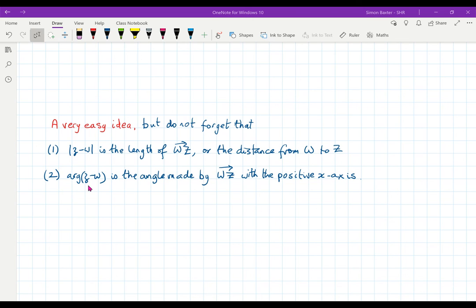And the second, the argument of the number Z minus W is the angle made by the vector WZ, not ZW, WZ with the positive X axis.